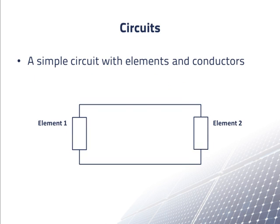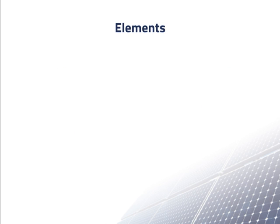Here is a diagram of a simple circuit with two elements, element 1 and element 2, and conductors. We assume that every element in a circuit has zero net charge at all times. Regions inside an element may have a positive or negative net charge, but overall the element is neutral.